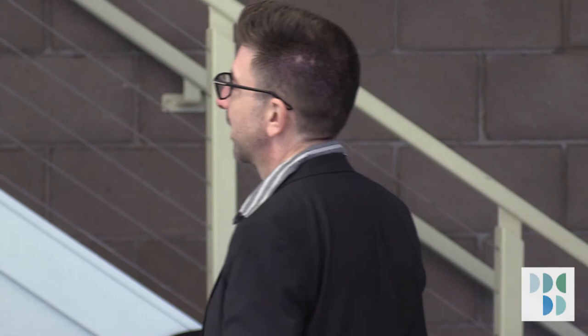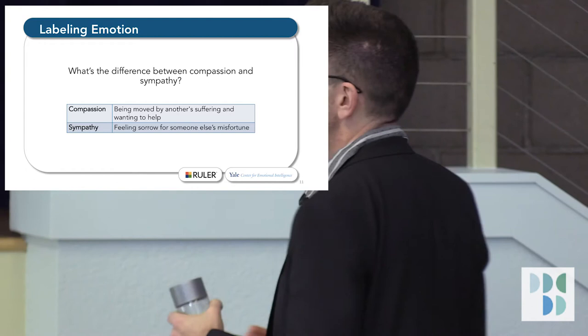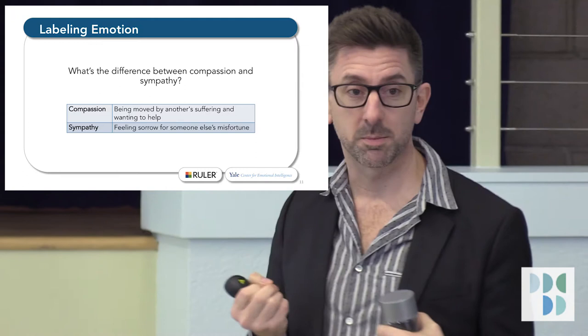Compassion and sympathy. Compassion feels like a sort of relating to somebody, you know, like humanity. It's a sort of a higher order. Sympathy feels like, I am sympathizing with you. It doesn't have that same sort of humanitarian connection. Compassion is being moved by another suffering and wanting to help. Whereas sympathy is merely feeling sorrow for someone else's misfortune. So the compassion is a bit deeper, a bit more profound.